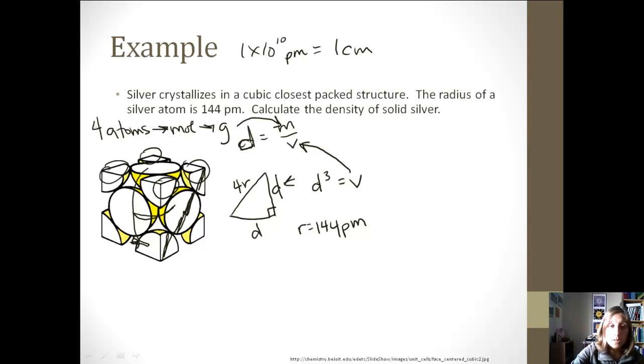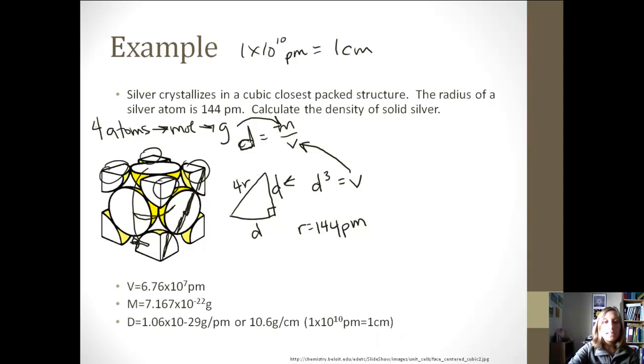So hopefully you have paused the video and worked through this. Your volume should be 6.76 times 10 to the -23. There's your mass, and here's your density. I gave it to you in grams per picometer cubed, or if you converted picometers to centimeters, it should be 10.6 grams per centimeter cubed. So we can go over that in class if you have any questions.